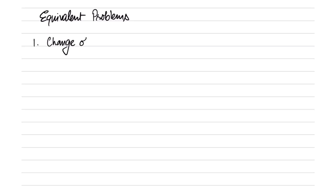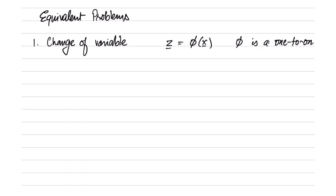It is also possible to obtain equivalent problems by change of variables. The change of variables should be of the form z = φ(x), where φ is a 1-to-1 function. A 1-to-1 function is such that given x you can find z and given z you can find x, and there is a 1-to-1 mapping between the z's and the x's. So the 1-to-1 function is invertible and there is a unique inverse — in other words, you can also write this as φ⁻¹(z), and φ⁻¹ is well defined.